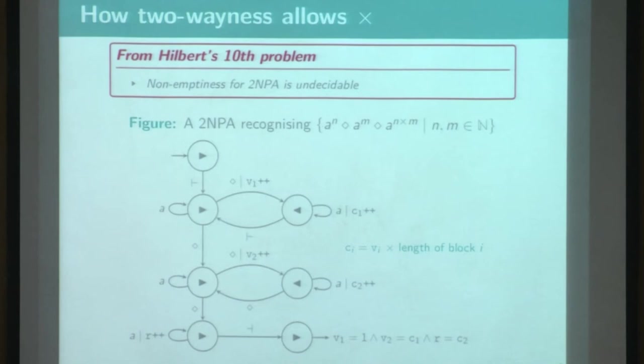And this is not so good because then the non-emptiness problem belongs to the undecidability. And to give you the intuition of this proof, I want to present an automaton which has three blocks of A's and can check with, thanks to those acceptance conditions, that the size of the last one is the product of the size of the two firsts.